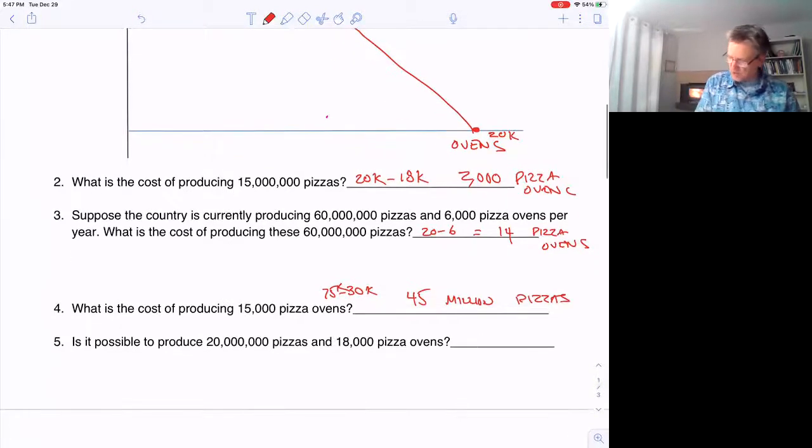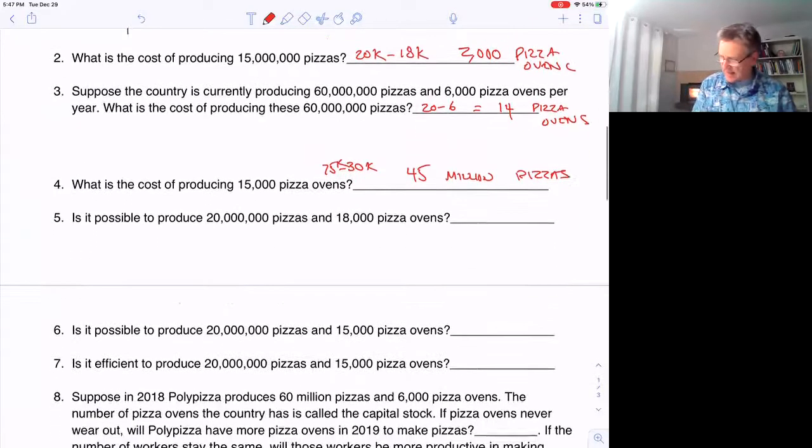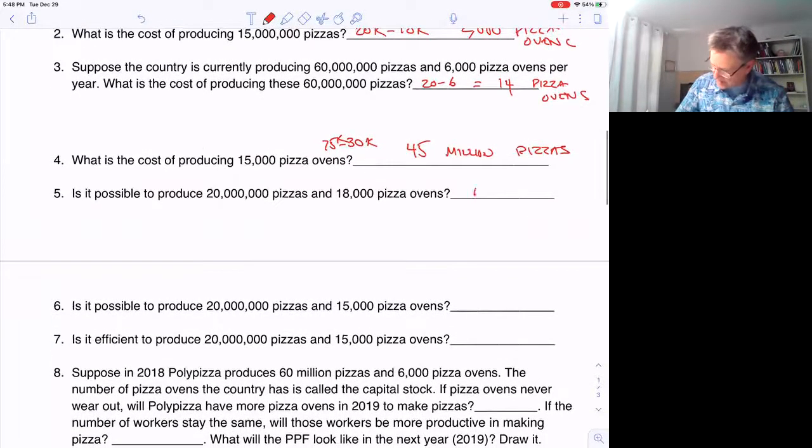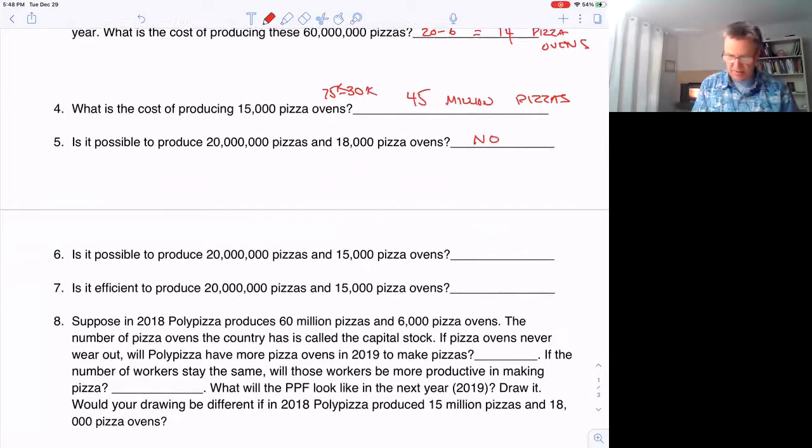Is it possible to produce 20 million pizzas and 18,000 pizza ovens? No, it's not. It's outside the PPF. Possible to produce 20 million pizzas and 15,000 pizza ovens? Yes, it is possible, but we are on the inside of the PPF, which means it's not efficient.